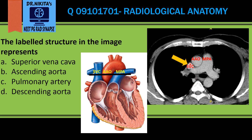On the right side is the SVC, in the middle is the ascending aorta, and to the leftmost is the pulmonary artery, which divides into the right and the left pulmonary artery. So the labeled structure here represents the superior vena cava, that is the SVC.